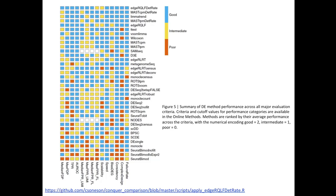If you have a more complex design — such as batch effects, or five different experimental groups with different combinations of drugs (a factorial design) — then the t-test cannot be applied. On the other hand, if you have a simple two-group comparison, a t-test would be totally fine.